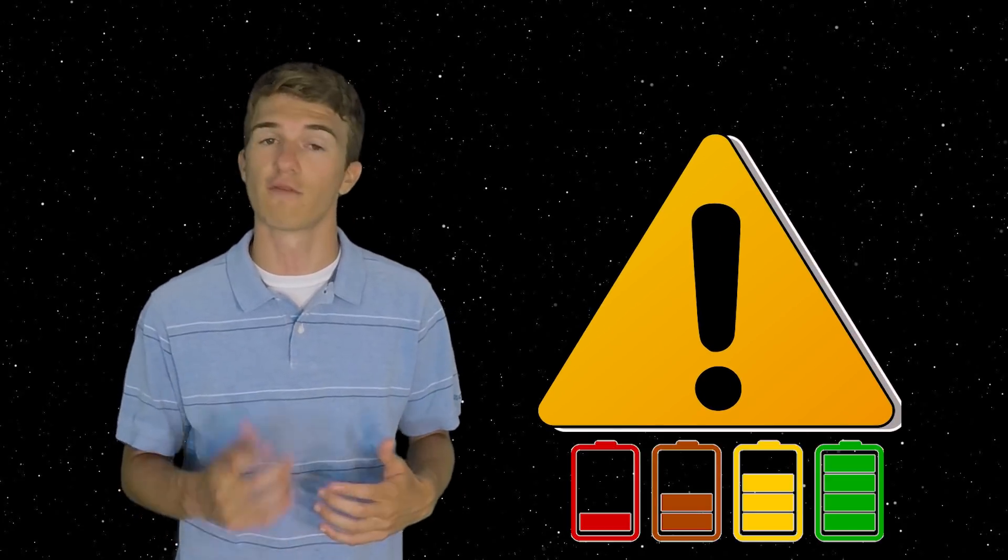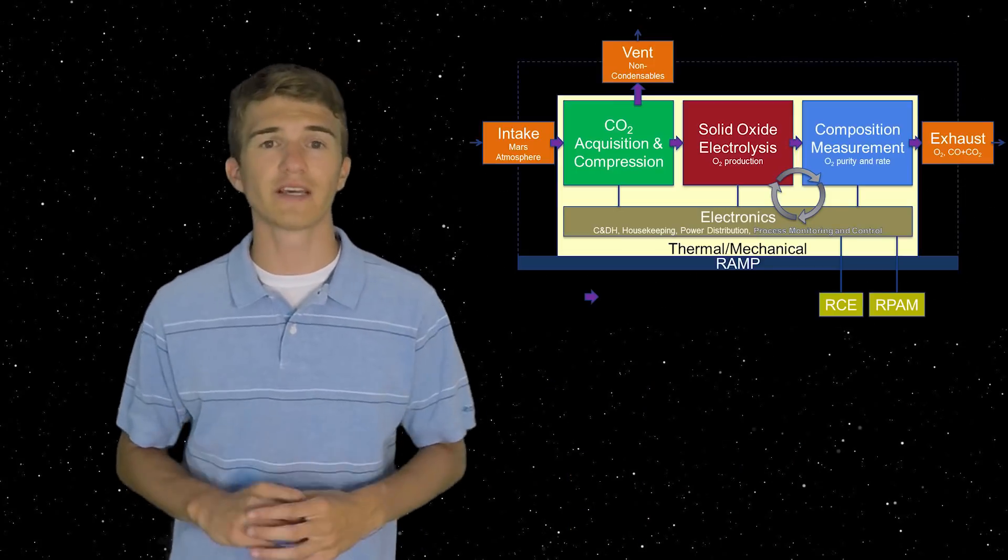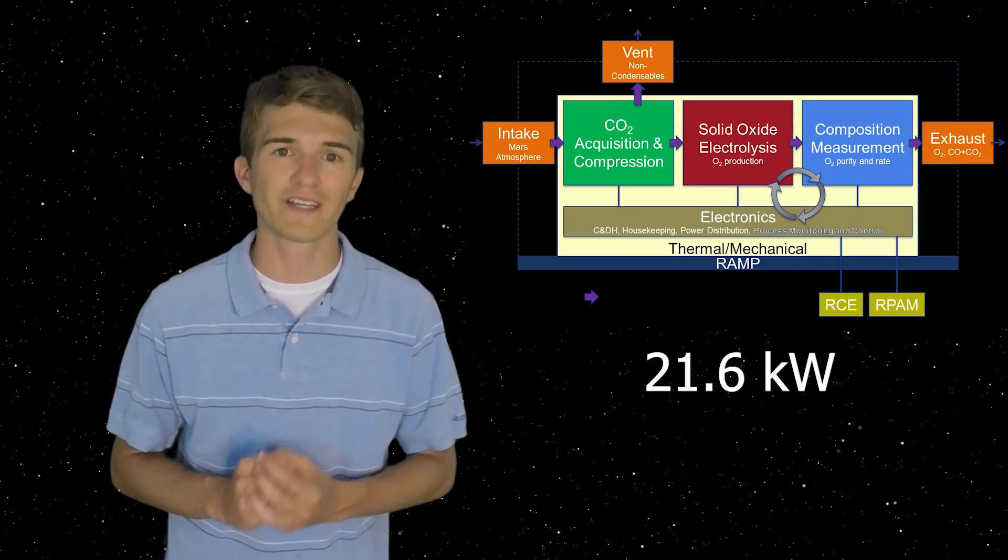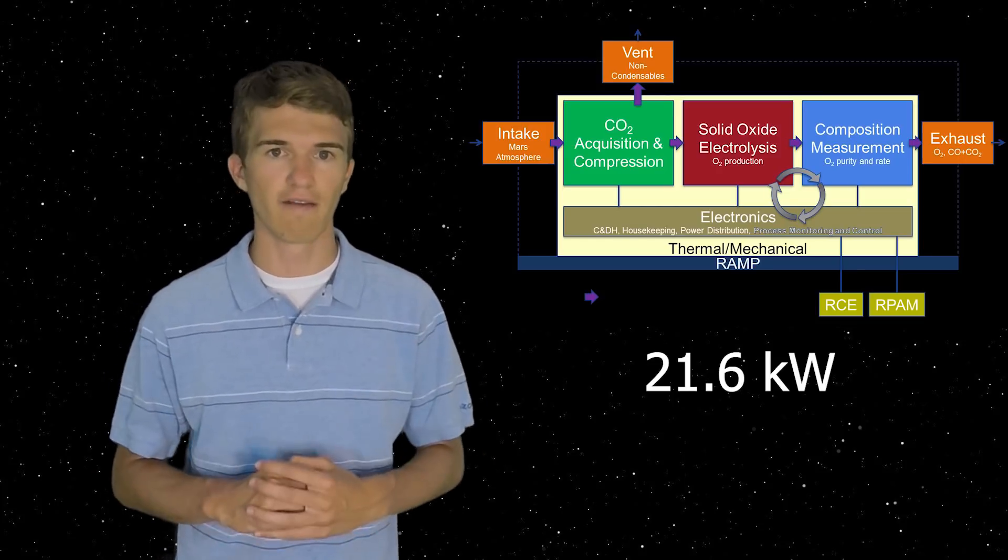So now that we've discussed some of the technology behind each one of these methods, let's discuss some of the limitations or how much energy you would need to actually create enough to keep a human alive for a day. Now let's start with electrolysis. It turns out that the MOXIE experiment would need about 21.6 kilowatts of power per day to keep a human alive. And that's about equivalent to four average households here on Earth.